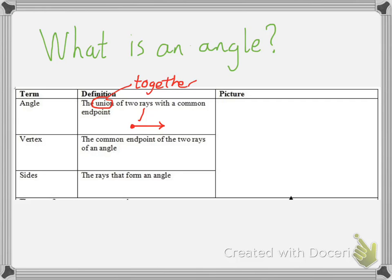So, I'll draw one ray. There's the endpoint. There's one ray. The other ray has to have the same endpoint, so I'll start from the same location. There, we've got two rays put together with the same endpoint. Hey, we've made an angle.